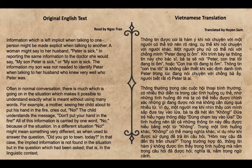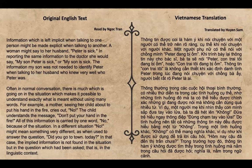Information which is left implicit when talking to one person may be made explicit when talking to another. A woman may say to her husband, 'Peter is sick.' In reporting the same information to the doctor, she would say, 'My son, Peter, is sick,' or 'My son is sick.' The information 'my son' would not need to identify Peter when talking to her husband, who knew very well who Peter was. Often in normal conversation, there is much going on in the situation which makes it possible to understand exactly what is meant without using many words.